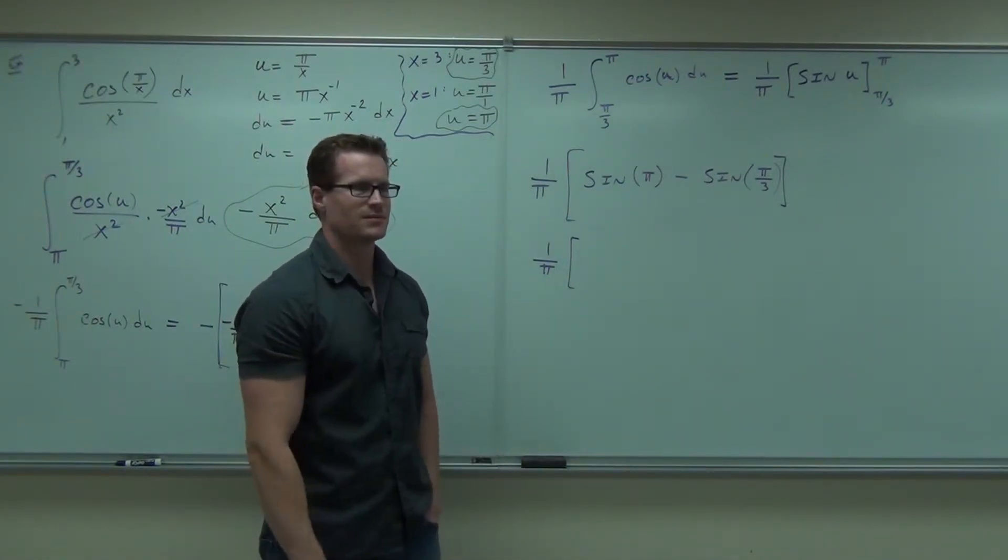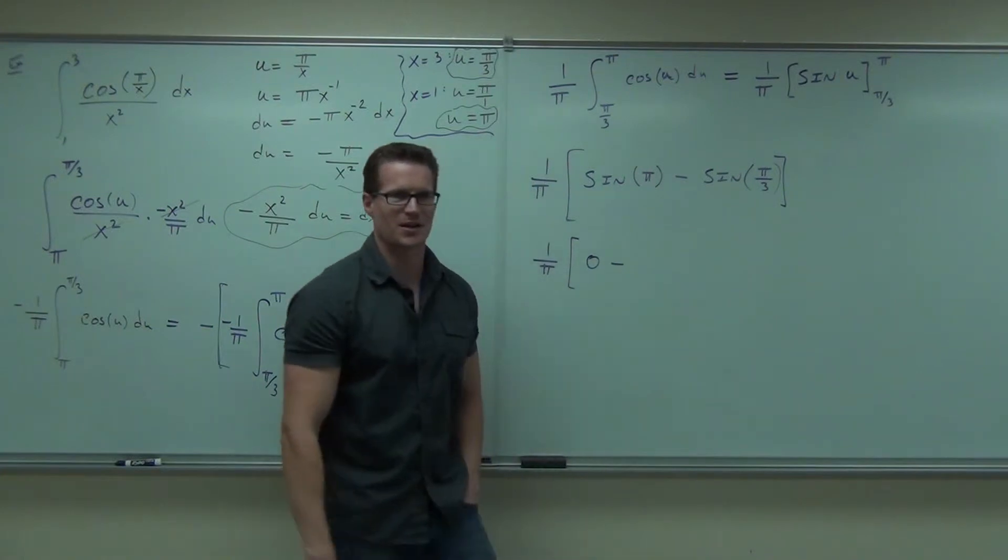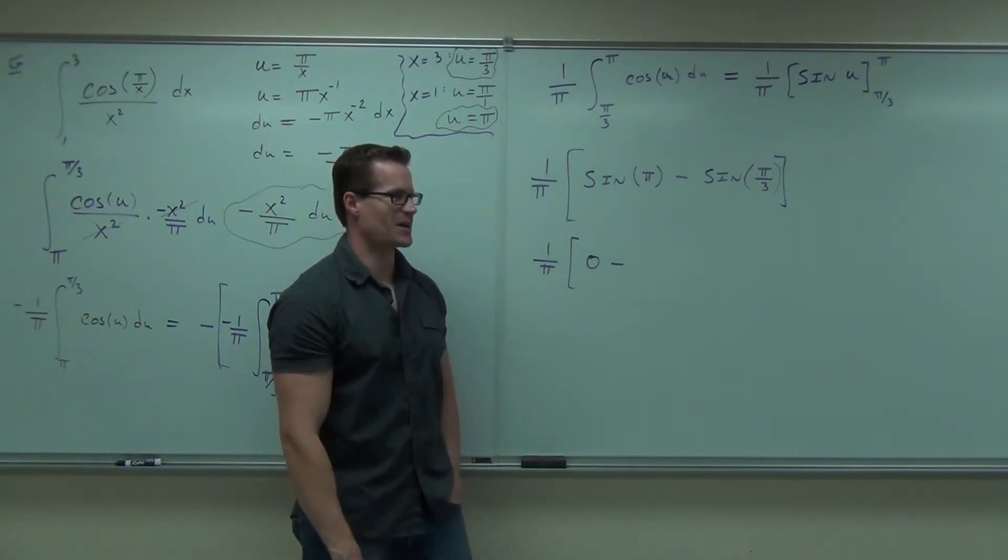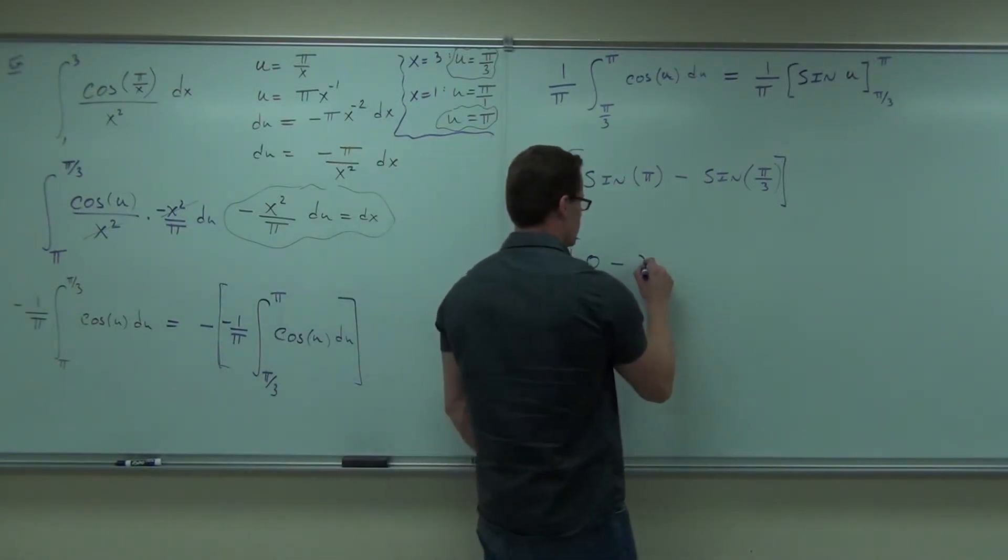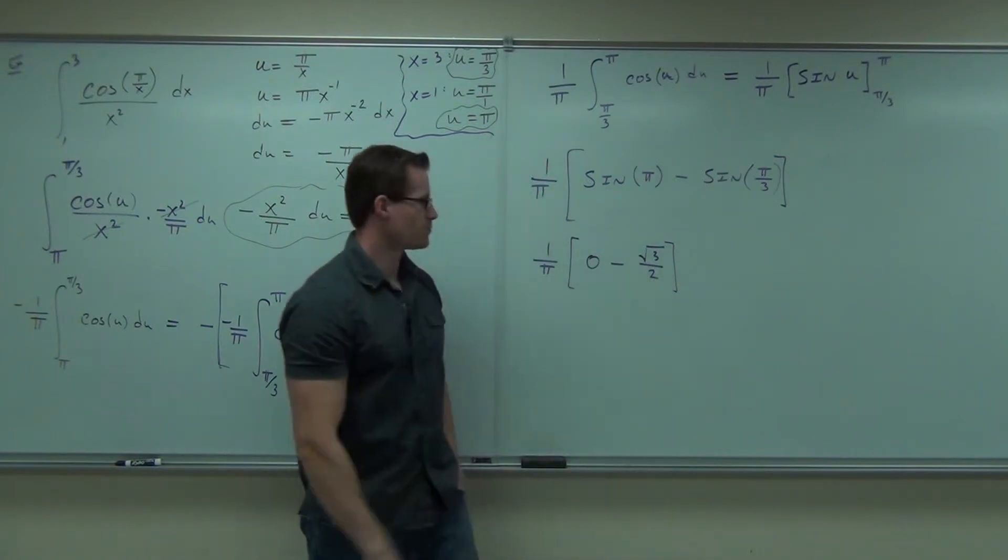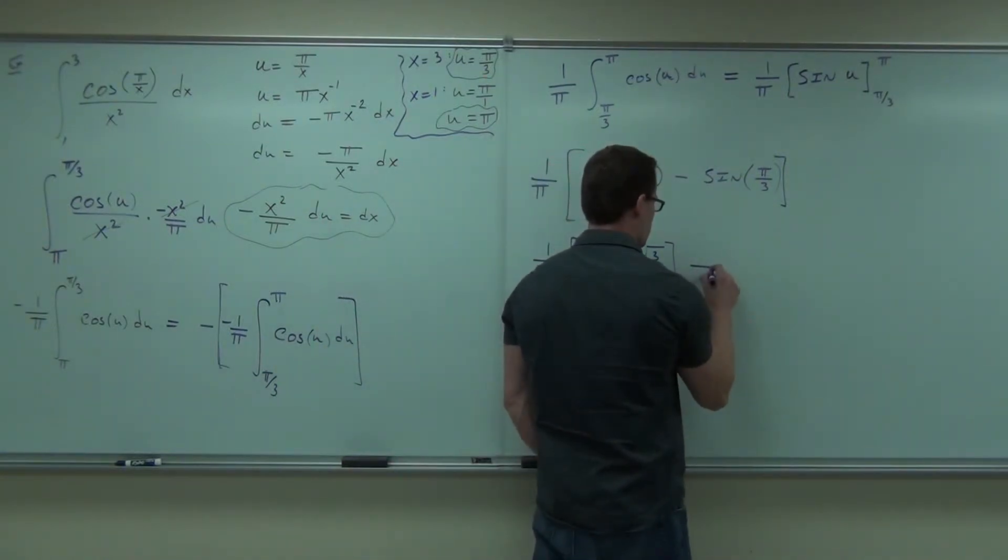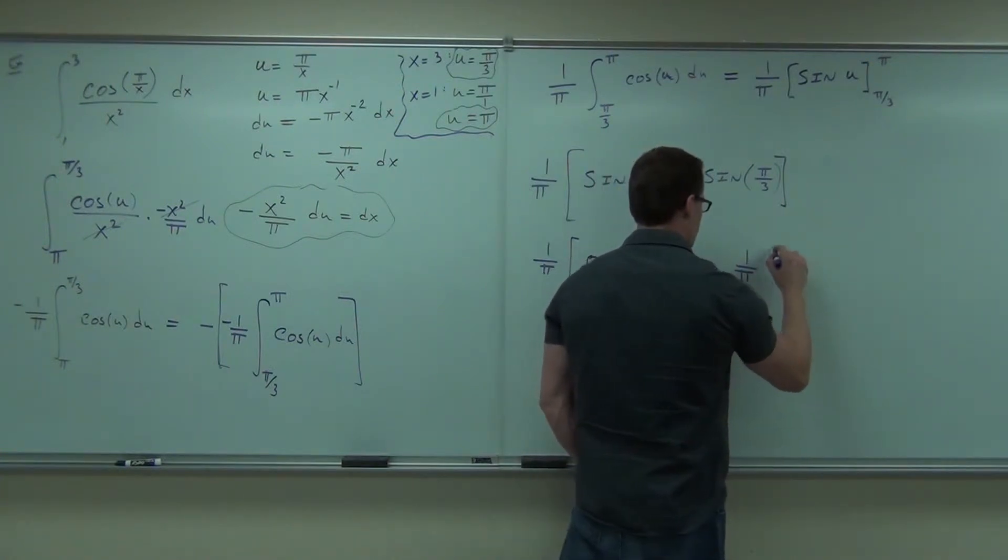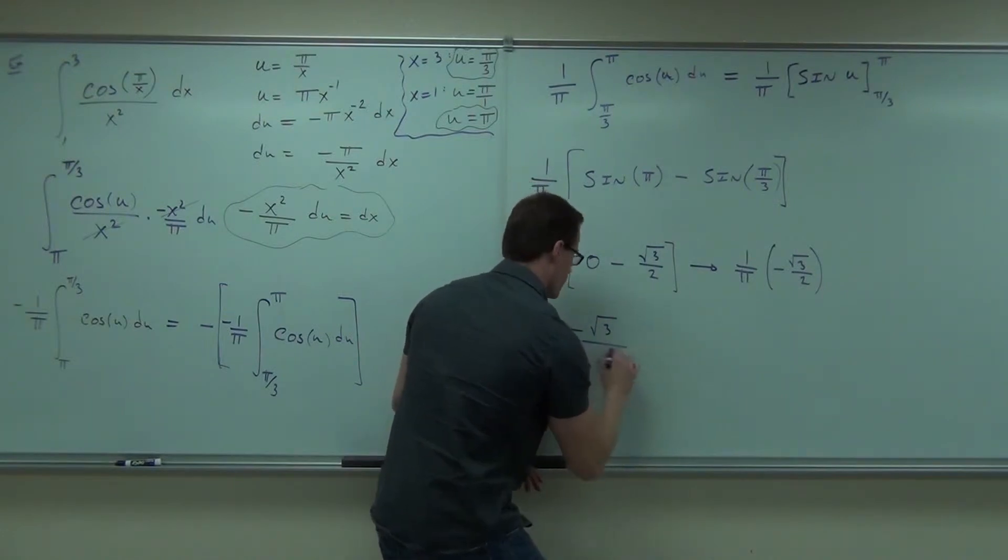Sine π is zero. Sine of π/3, how much is that? Root 3 over 2. Good. Zero minus root 3 over 2? Negative root 3 over 2. 1 over π times negative root 3 over 2. Put it all together, you're going to get negative root 3 over 2π. That's your area.